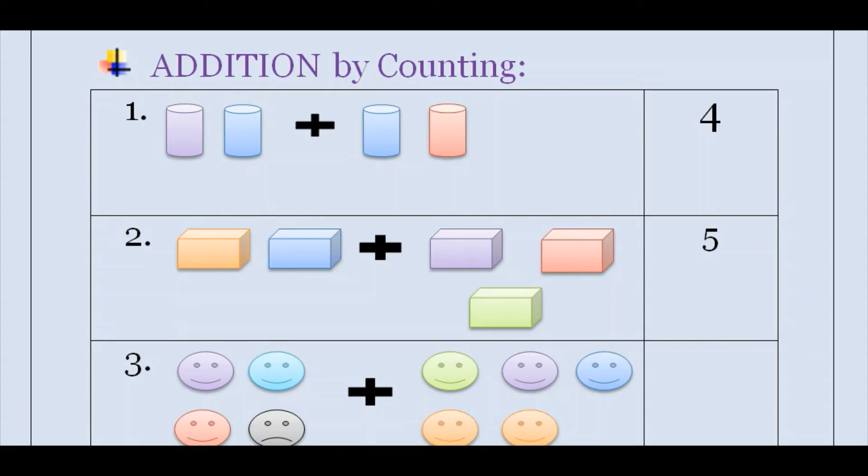Let's see our third question. Here you can see some smileys. We have to count these and add them. So let's count: here given 1, 2, 3, 4 smileys, and here given 1, 2, 3, 4, 5. Now you have to count all of them: 1, 2, 3, 4, 5, 6, 7, 8, 9. So it means 9 smileys are there.